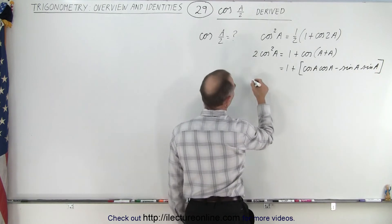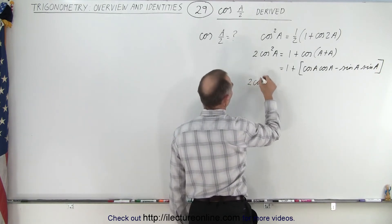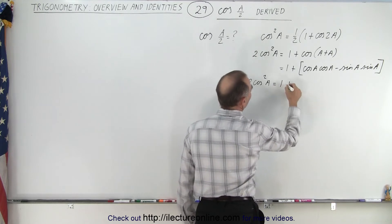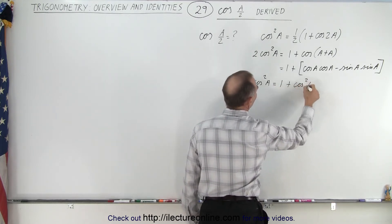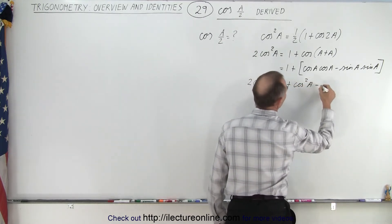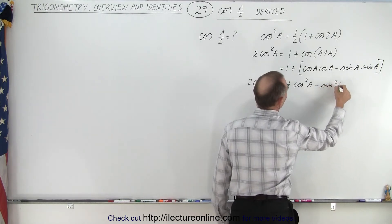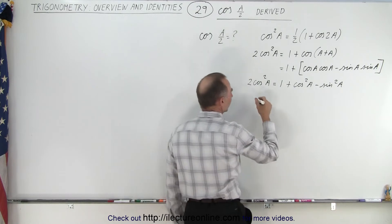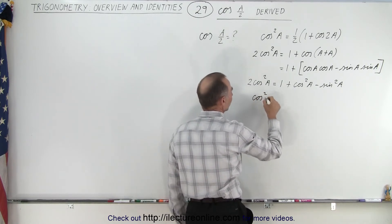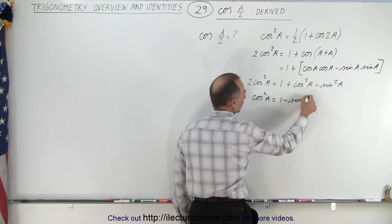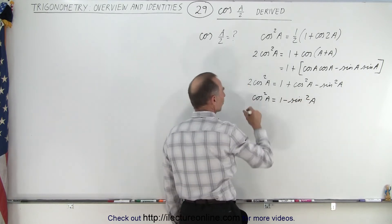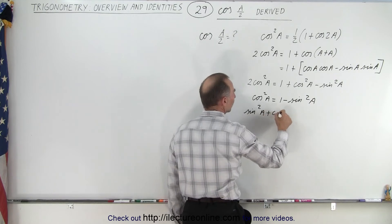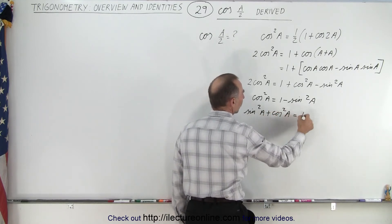So we can say that two times the cosine square of A is equal to one plus the cosine square of A minus the sine square of A. Subtracting the cosine square of A from both sides gives cosine square of A equals one minus the sine square of A. Bringing the sine square across, we get the sine square of A plus the cosine square of A is equal to one.